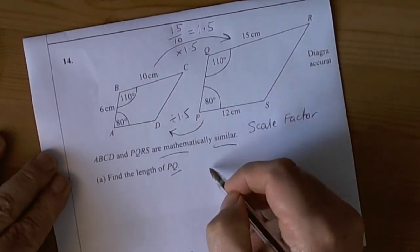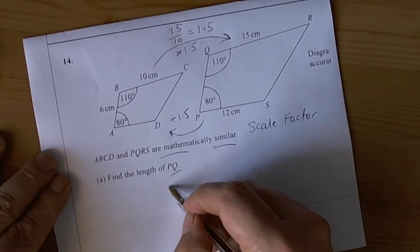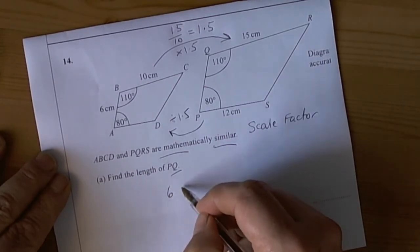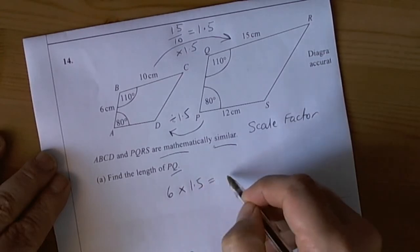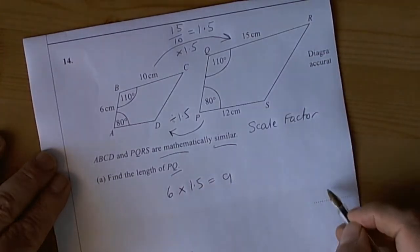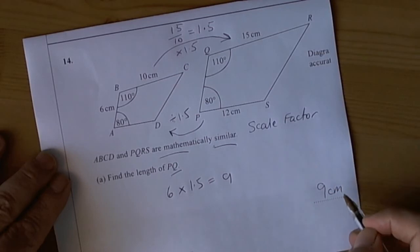The question asks for the length of PQ. To get PQ, its corresponding side on the small shape is BA, which had a length of 6. Times that by the scale factor and we get an answer of 9cm. So our first answer is 9cm.